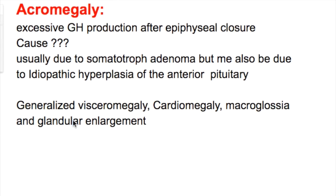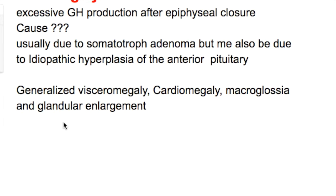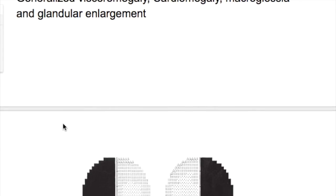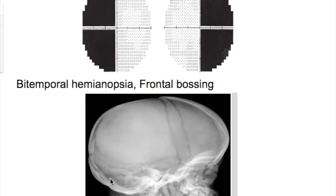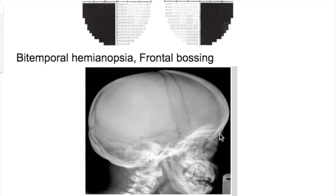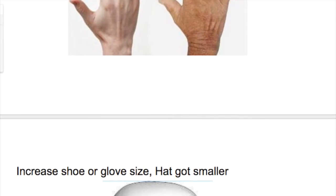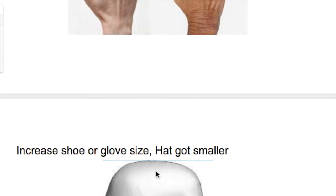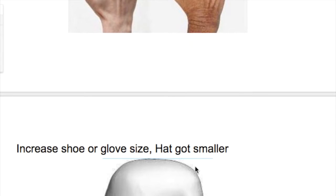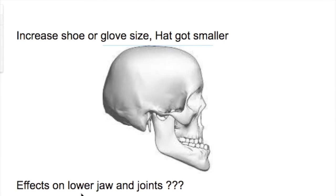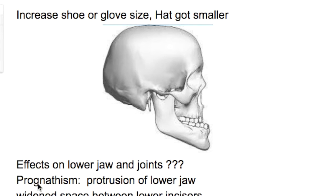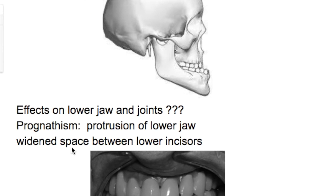There is generalized visceral megalia, cardiomegaly, macroglossia, and glandular enlargement. It causes bitemporal hemianopsia and there is frontal bossing also. There is increased hand and foot size, and increased shoe and glove size — the patient complains that their shoes got smaller. There is prognathism, protrusion of the lower jaw due to overgrowth, with widened spaces between the lower incisors because of overgrowth of the lower jaw.